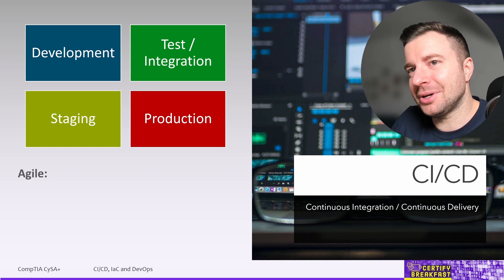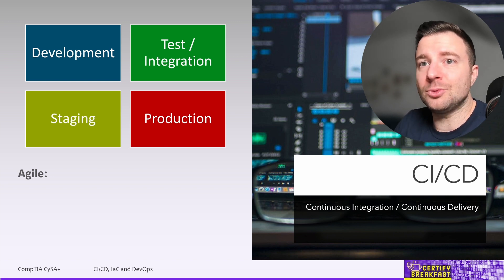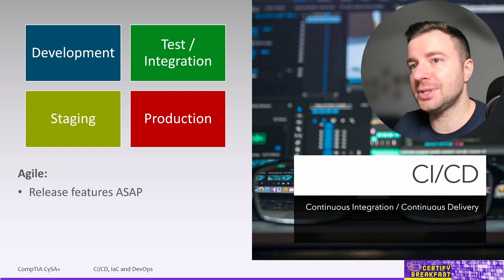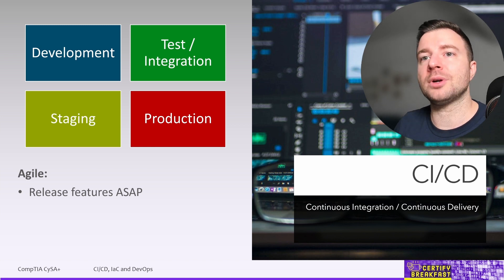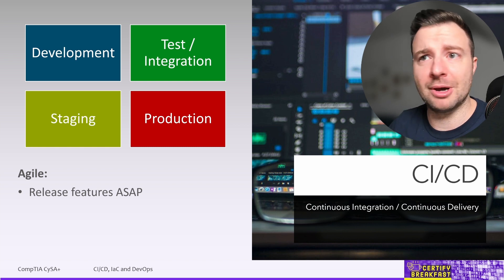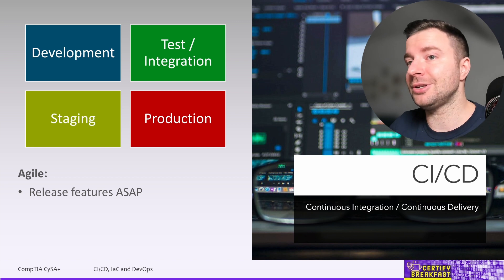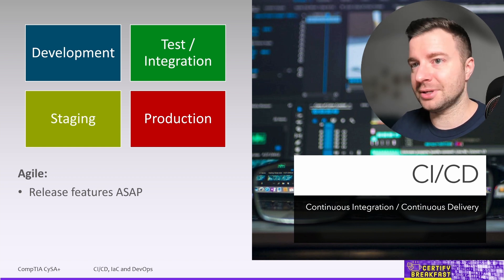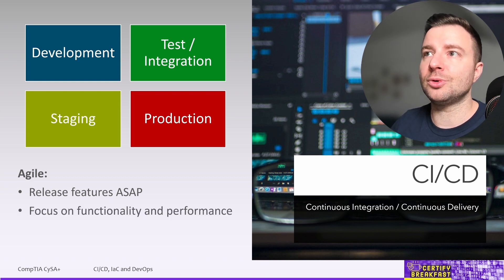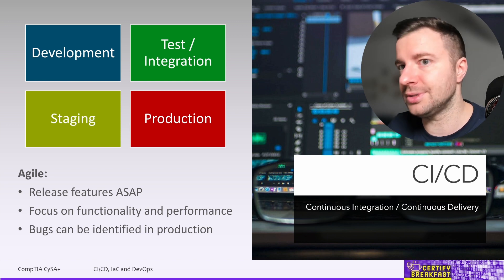Now, remember a long, long time ago when we mentioned Waterfall and Agile development methods? Well, in Waterfall, a project should go through these stages in sequence, one after the other. But we know that Waterfall is so last year, so inflexible — so we should forget about it and focus on Agile. Agile principles focus on releasing features as soon as possible and focusing on performance and features, while bugs and faults can much more efficiently be identified in production, for example, when everybody starts using the application.